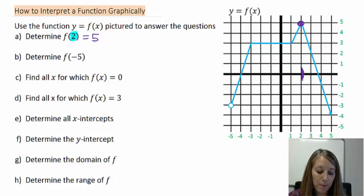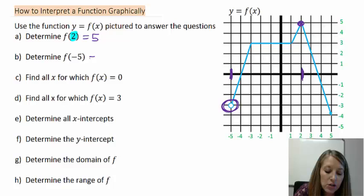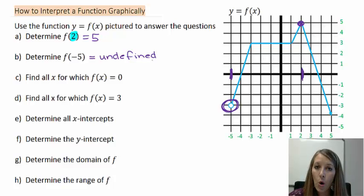Same thing for part b. If I want f of negative 5, I figure out where my x value of negative 5 is. And I figure out what my ordered pair is at that. Now this is kind of a trick question because it looks like I have a point there. But notice this is an open circle. So this is actually an undefined point. So that actually means my y value does not exist. So this is actually undefined. Because there is an open circle, my point is not defined, hence my y value is undefined.